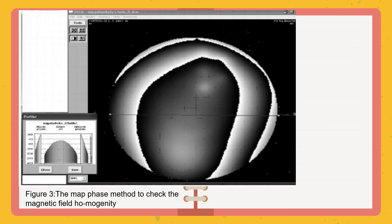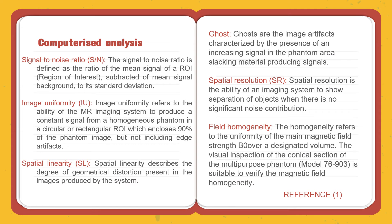We have computerized analysis using six parameters: signal-to-noise ratio, image uniformity, spatial linearity, ghost, spatial resolution, and field homogeneity. The signal-to-noise ratio is the ratio of the mean signal subtracted by the mean signal to the standard deviation. Image uniformity refers to the ability of the MRI system to produce a constant signal within a circular or rectangular ROI enclosing 75% of the phantom image.